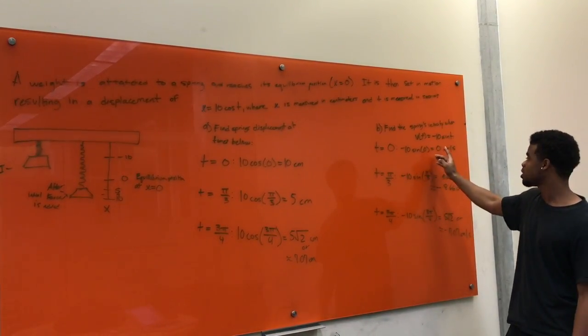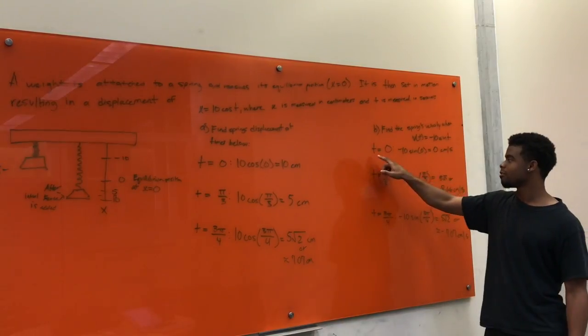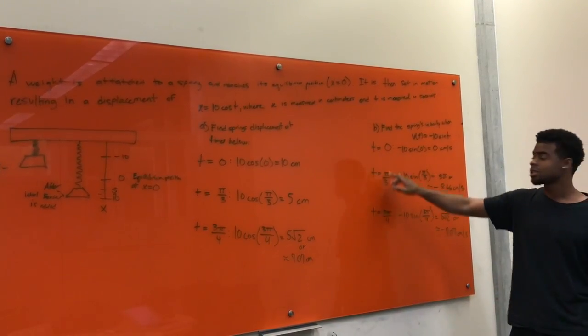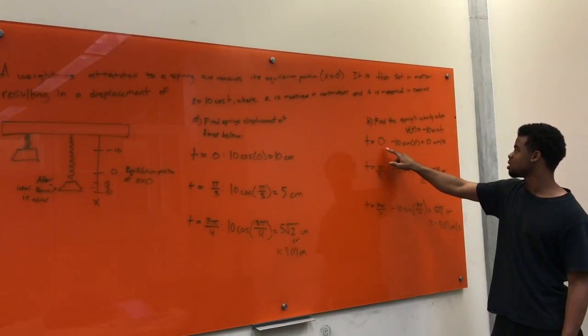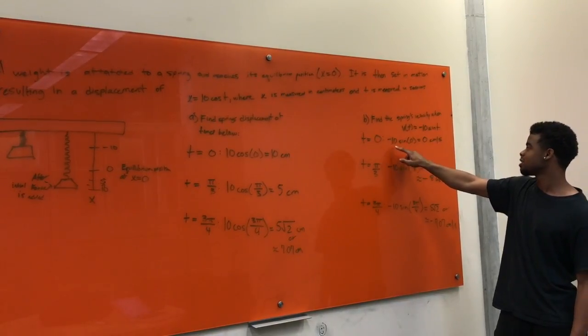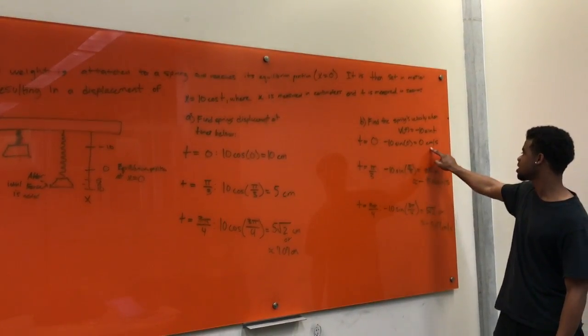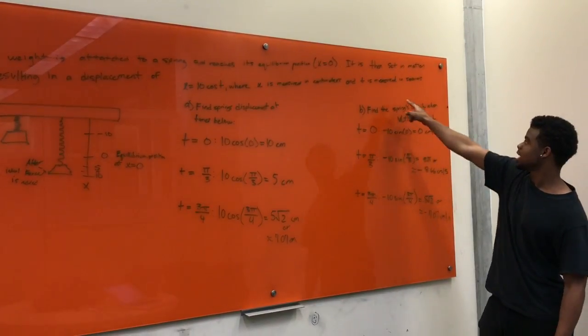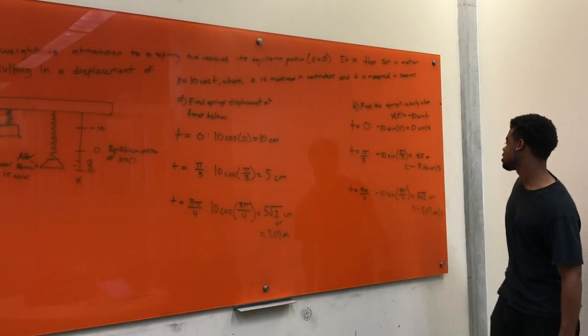Once we found that, we substituted each value of t for the given values that we were given. For the first one, we got t equals zero. So, we substituted that into negative 10 sine of zero, and that came out to zero centimeters per second, because that's what we were asked to find in the equation.